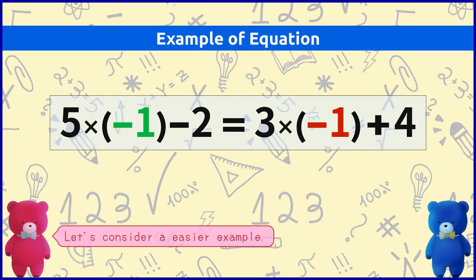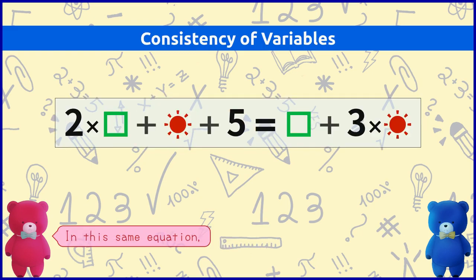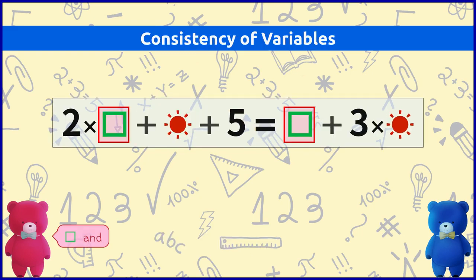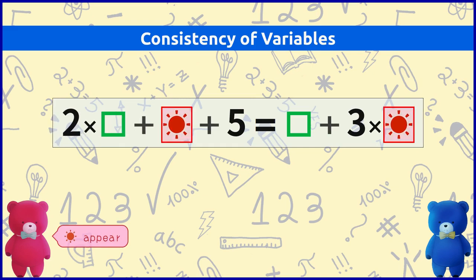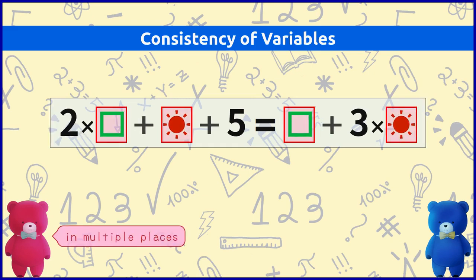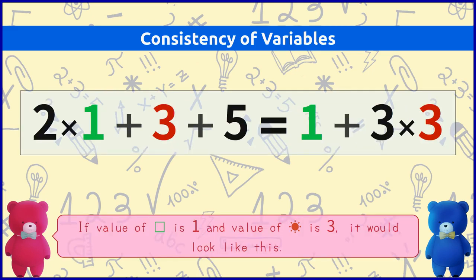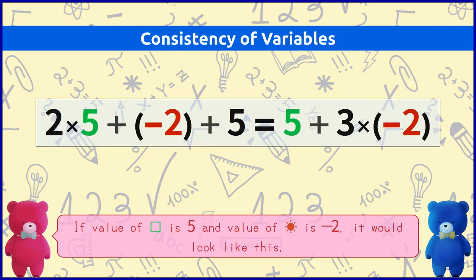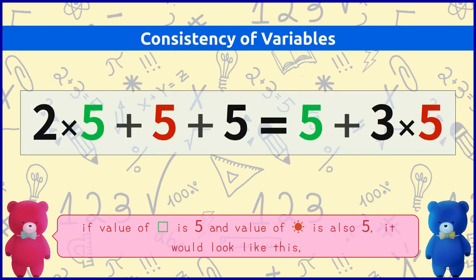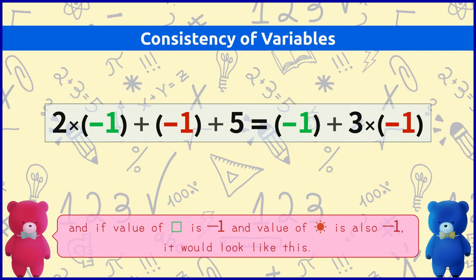Let's consider an easier example in this same equation. Square and sunshine appear in multiple places. Then what happens? If value of square is 1 and value of sunshine is 3 it would look like this. If value of square is 5 and value of sunshine is minus 2 it would look like this. If value of square is 5 and value of sunshine is also 5 it would look like this. And if value of square is minus 1 and value of sunshine is also minus 1 it would look like this.